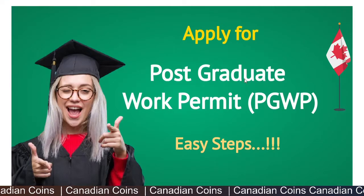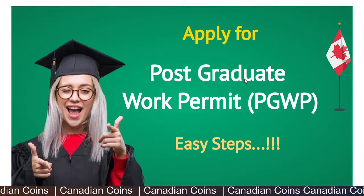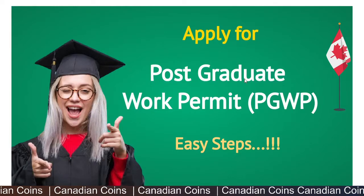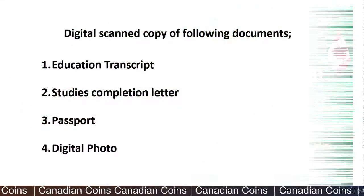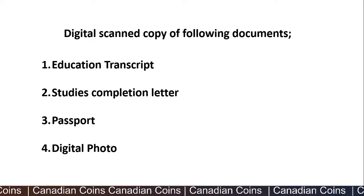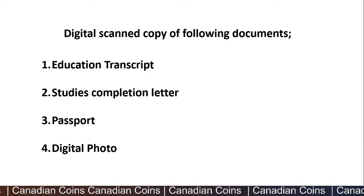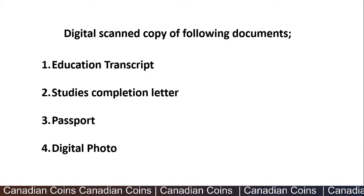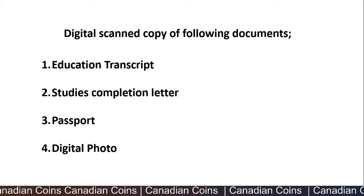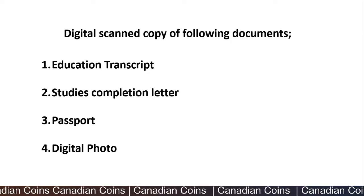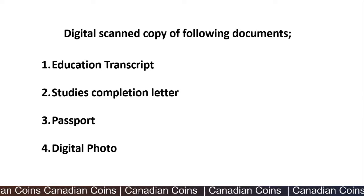Hello everyone, welcome to Canadian Coins. In this video you will see the detailed steps in applying for a postgraduate work permit. Before we start our application, we have to keep our documents ready. We need four documents: the educational transcript from the college, a study completion letter from the college, your passport — I usually keep the front and back pages of my passport and insert the images in a Word document so it will be one file — and a digital photo as the fourth one.